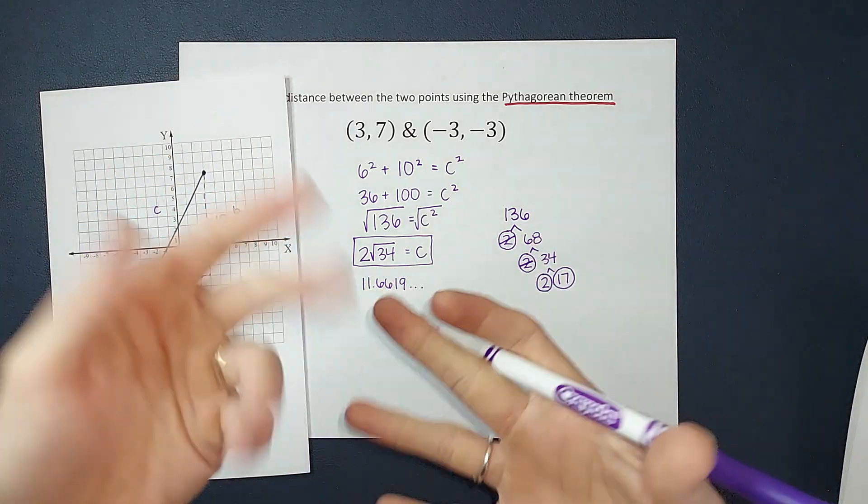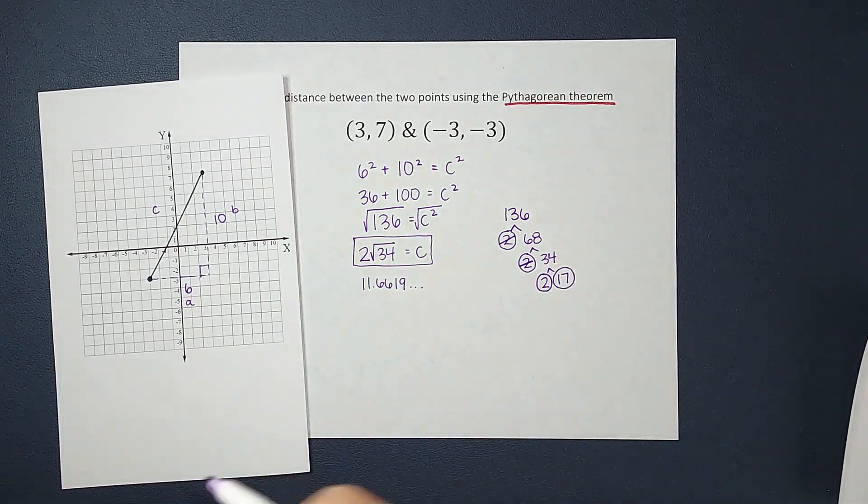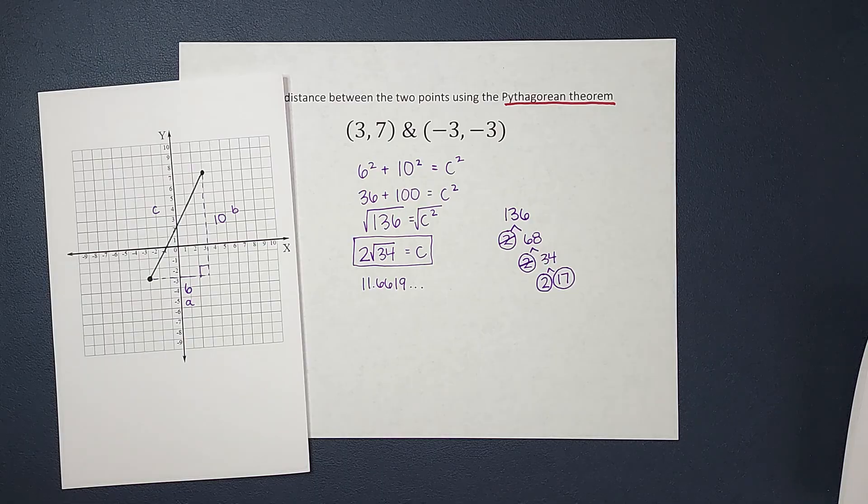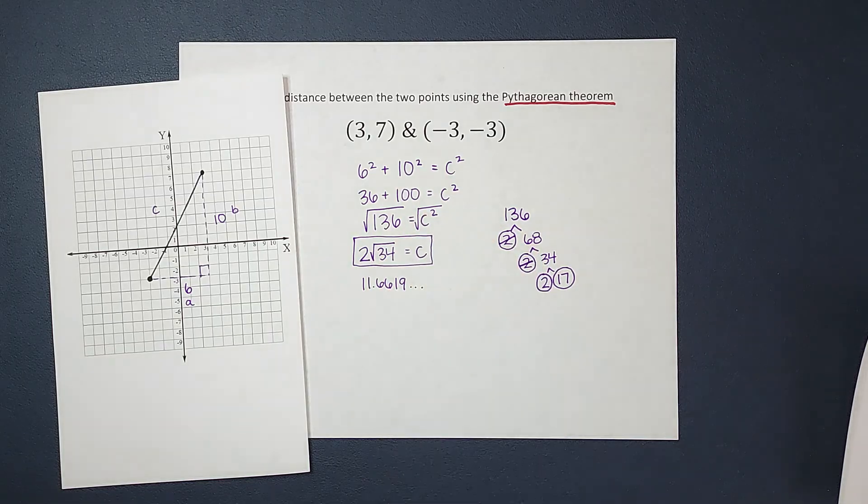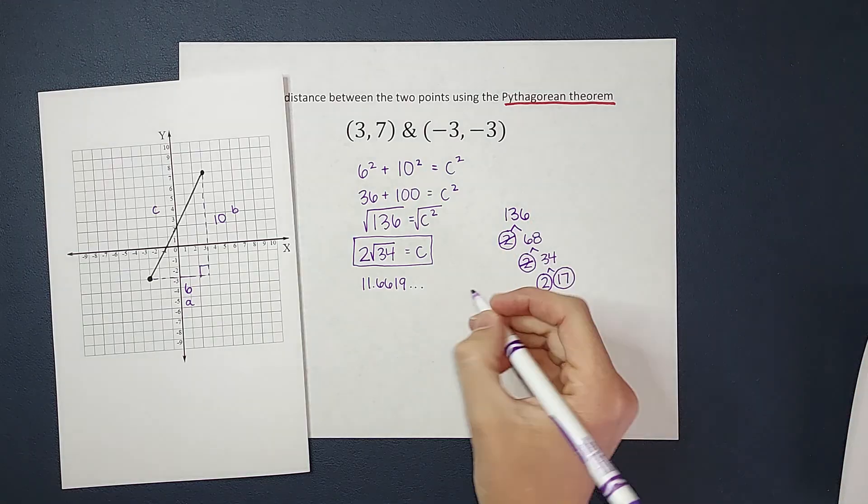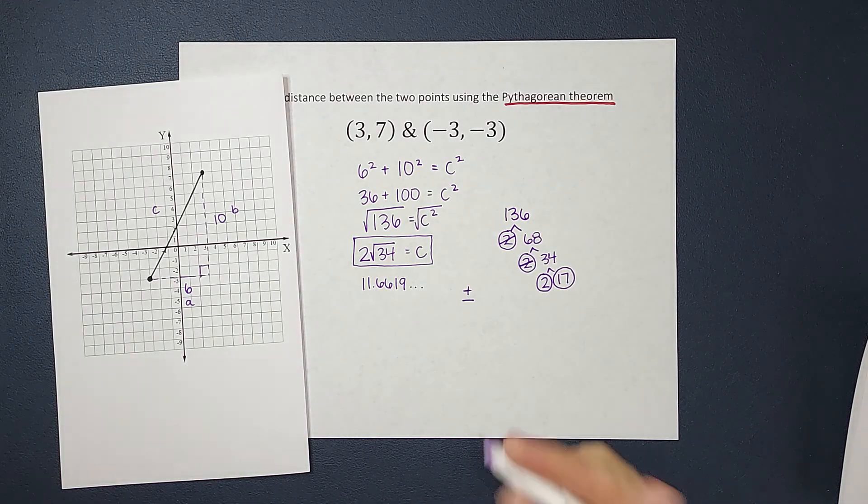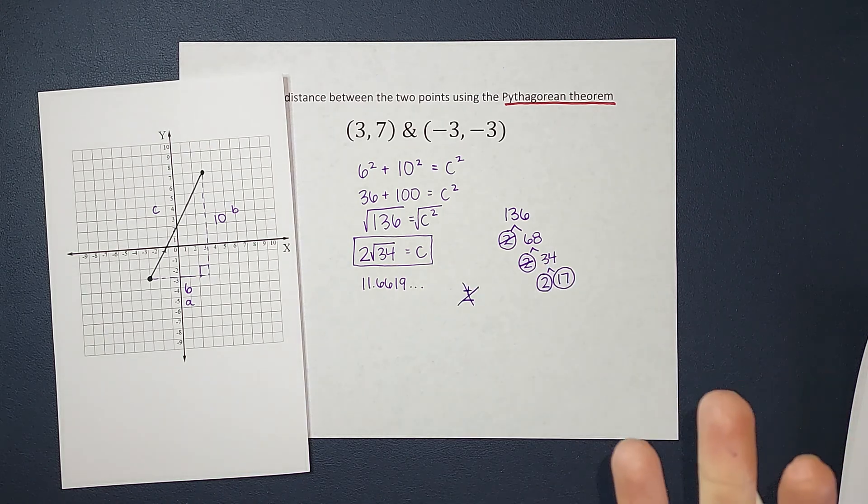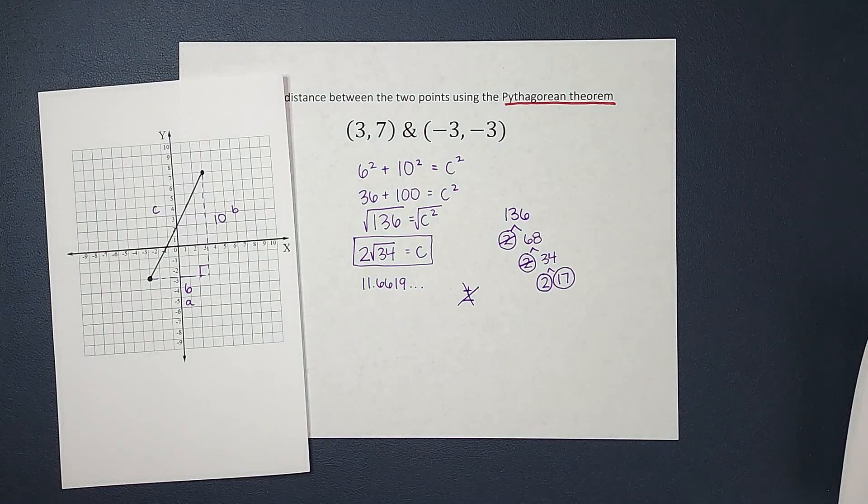So the decimal can be helpful to kind of give you an idea. We just typically like our answers to be a little cleaner than that. Last thing I wanted to mention is usually when we introduce a square root into an equation that we're solving, usually we use a plus or minus sign. So if you're like, why didn't you use a plus or minus? That is because we are talking distance here, and you can't have a negative distance. So we didn't need to use the plus or minus in this scenario.